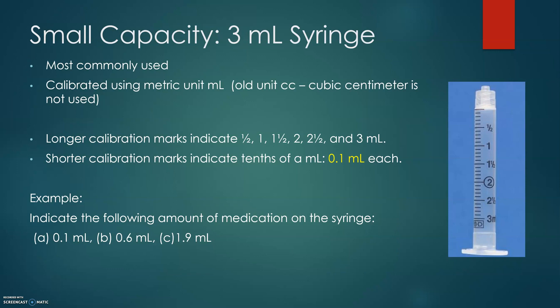Let's talk about the small capacity 3 milliliter syringe, because it is the most commonly used syringe. This syringe is calibrated using the metric unit milliliter. As you can see on the image, there are longer calibrations and shorter calibrations. The longer calibrations indicate half milliliter increments, and the maximum capacity is 3 milliliters. Taking a closer look, each half milliliter has 5 smaller units.